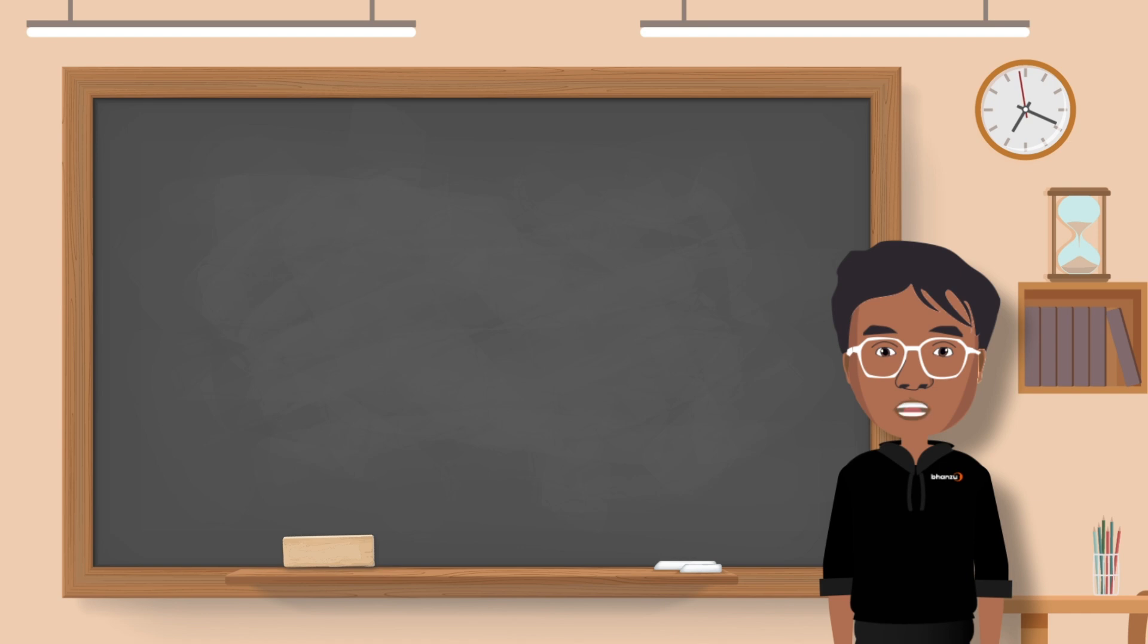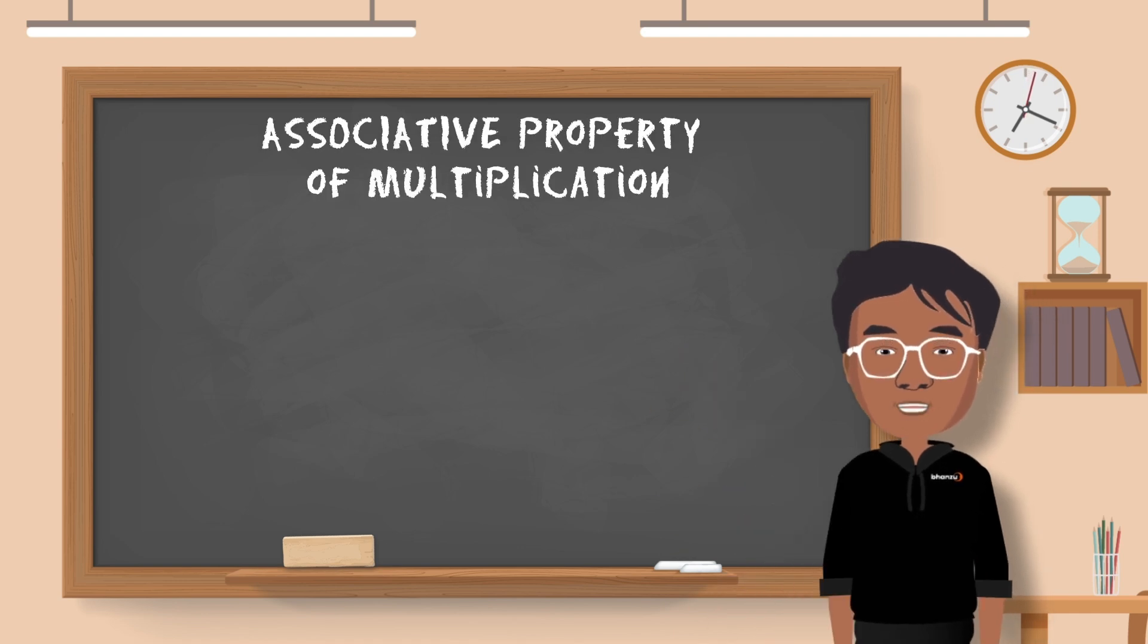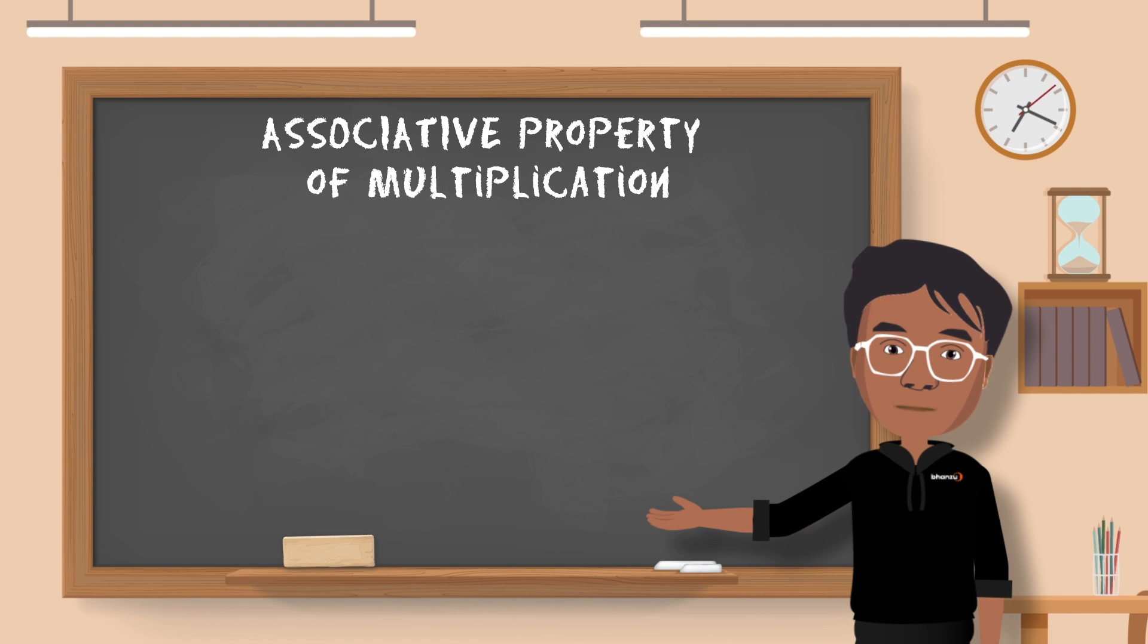Next up is the associative property of multiplication. Just like the name suggests, changing the grouping of the factors in the product does not change the final result. In simpler terms, how we associate the numbers in the brackets does not have an effect on the result. Here's an example.